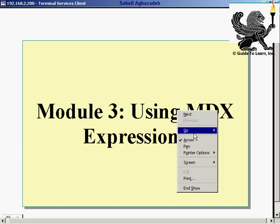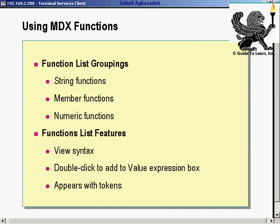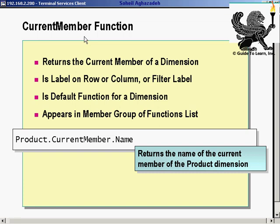Let's switch back to the discussion. We used MDX functions to display member information, choosing from various categories — string, member, and numerical functions. There's a viewing syntax showing tokens in red that you replace. The very important current member function returns the current member of a dimension — it's the label in a row, column, or filter. It's the default function for a dimension. Using dimension.current member.name returns the name of the current member of that dimension.